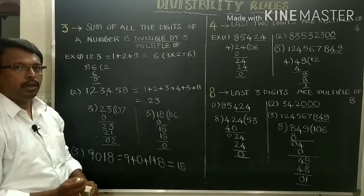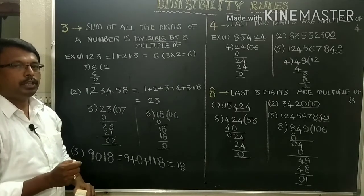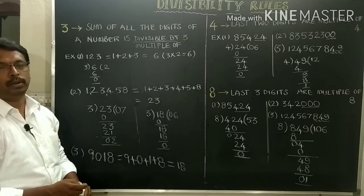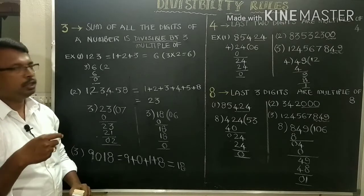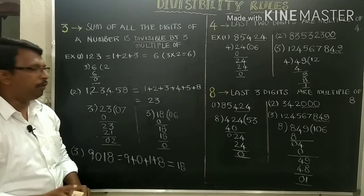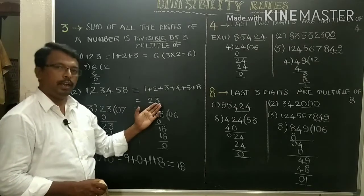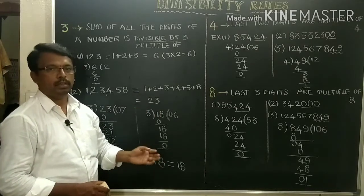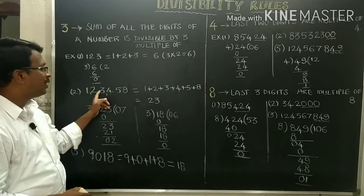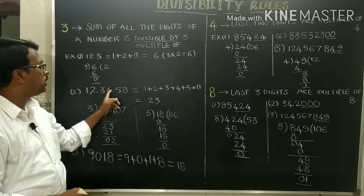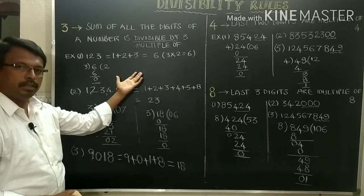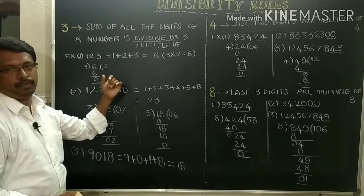So simply you have to know: 23 is not in the 3 times table. 3 sevens are 21, 3 eights are 24 — there is no 23 in the 3 times table. Simply, you can say 1,23,458 can't be divided by 3.